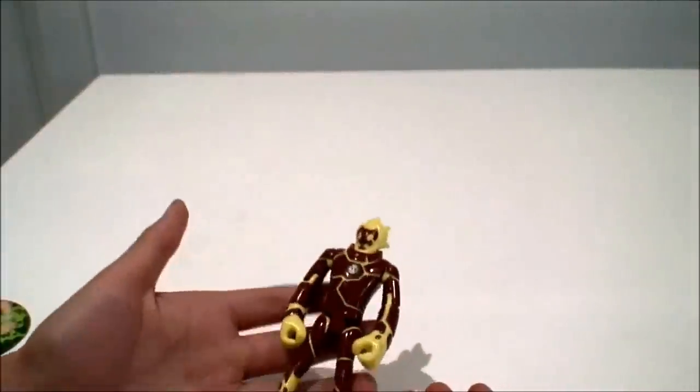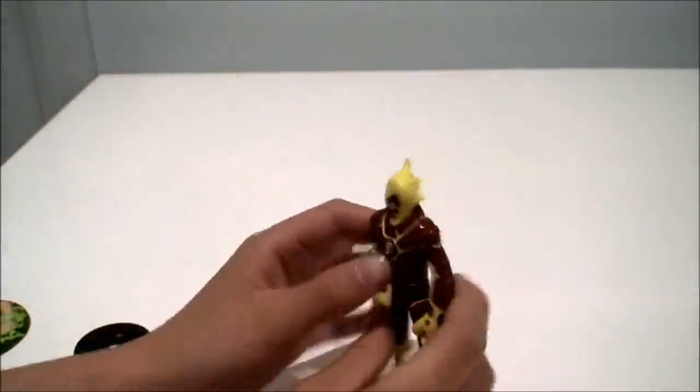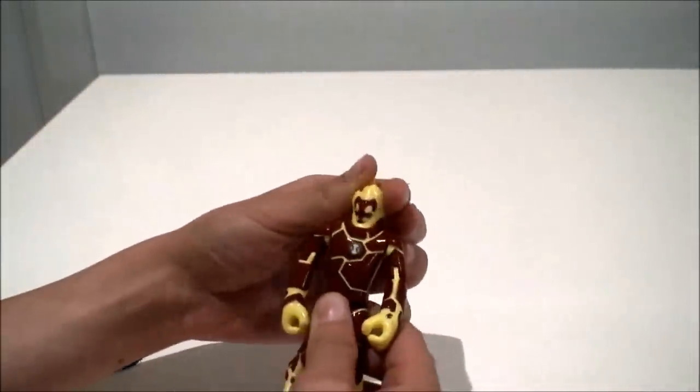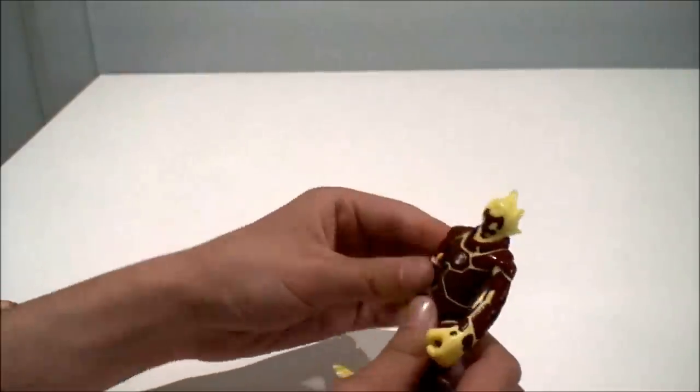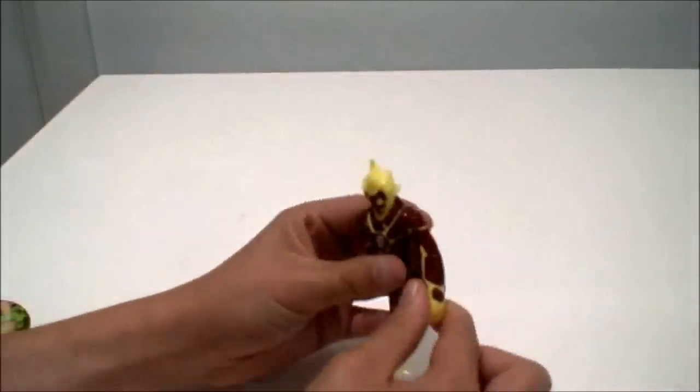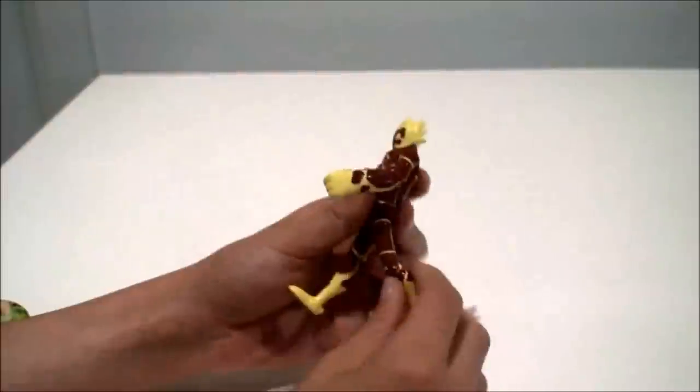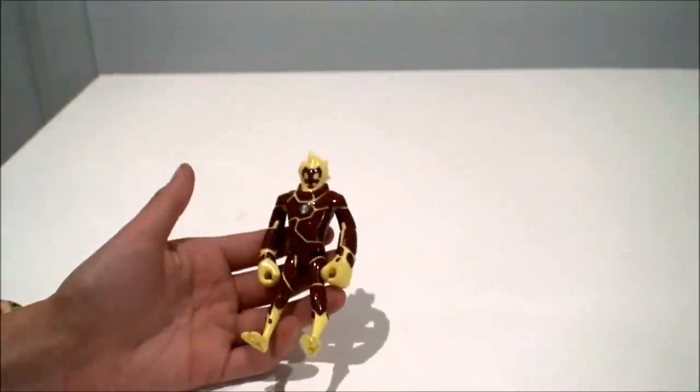He's got the basic articulation of a normal figure. So basic articulation, when I say that, what I mean is he can move his head, well actually he can barely move his head really. When I say basic articulation I'm saying that means he can move his arm, his elbow, and leg and knee. So that's the basic articulation, that's what I mean if I say that. So that's Heat Blast.